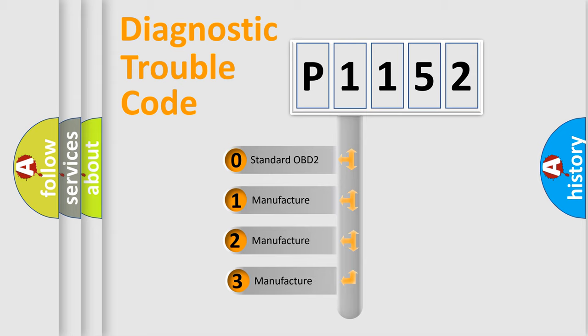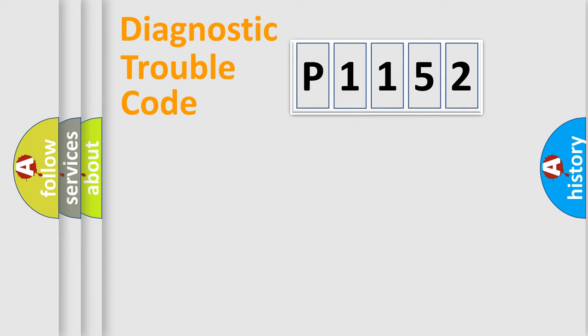If the second character is expressed as zero, it is a standardized error. In the case of numbers 1, 2, 3, it is a manufacturer-specific expression of the car-specific error.